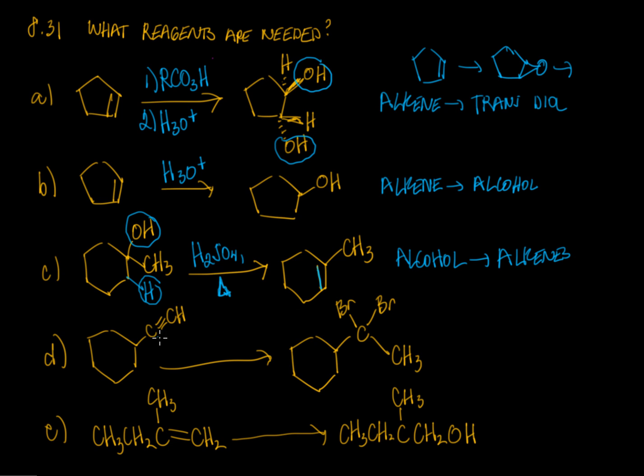In this reaction, we have an alkyne, a carbon-carbon triple bond. And we're transforming this to a dihalide where the two halogens are connected to the same carbon. It's a 1,1-dihalide.